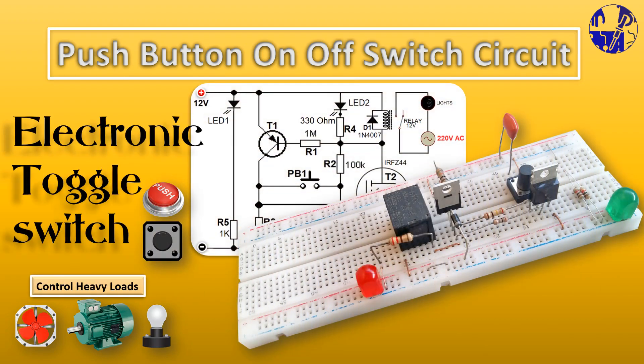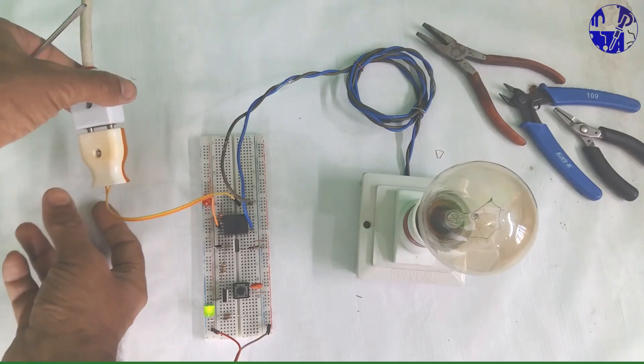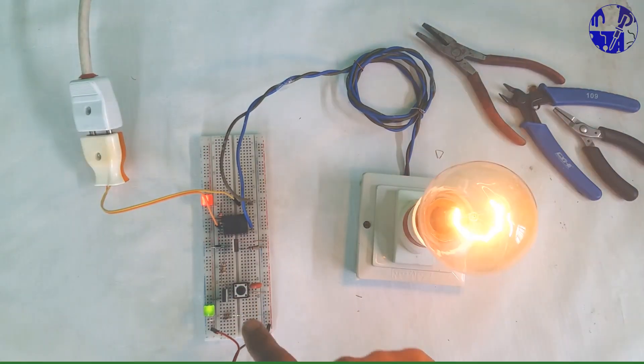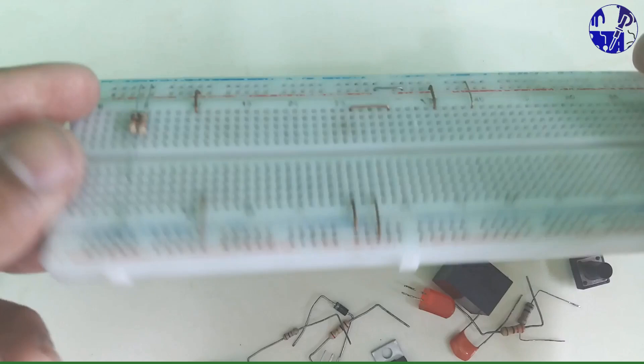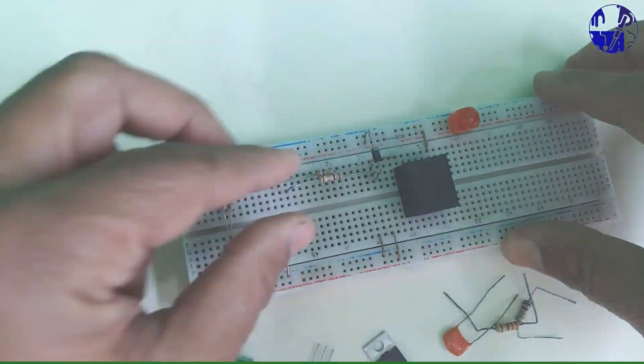In this DIY video, I demonstrate the construction of an electronic toggle switch using an N-channel MOSFET and a 12-volt relay on a breadboard.